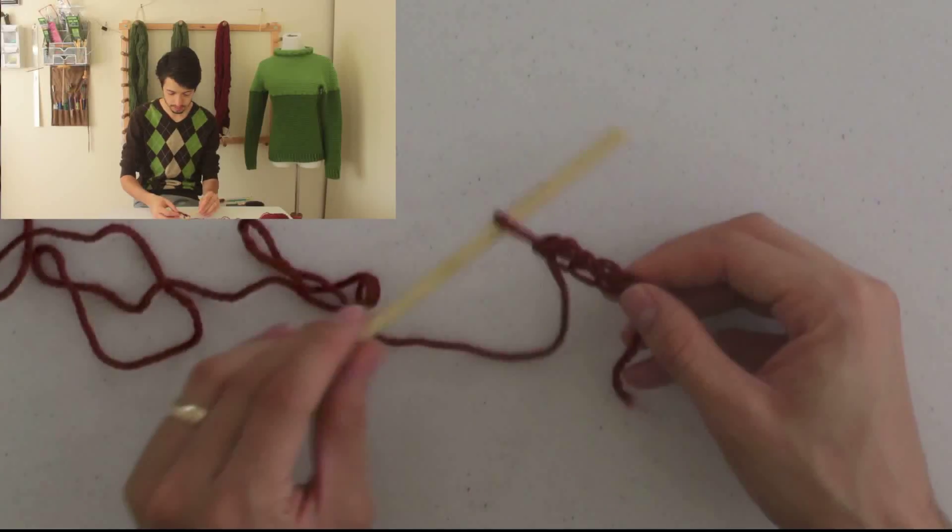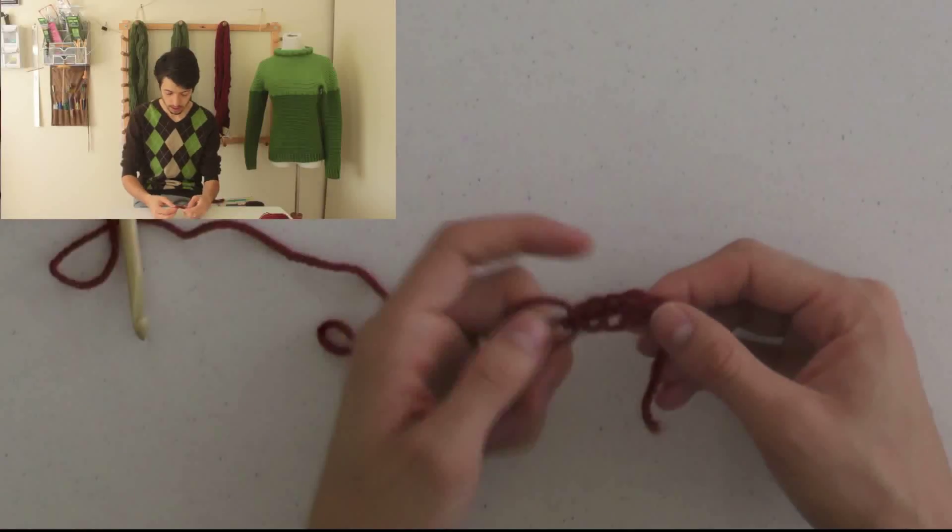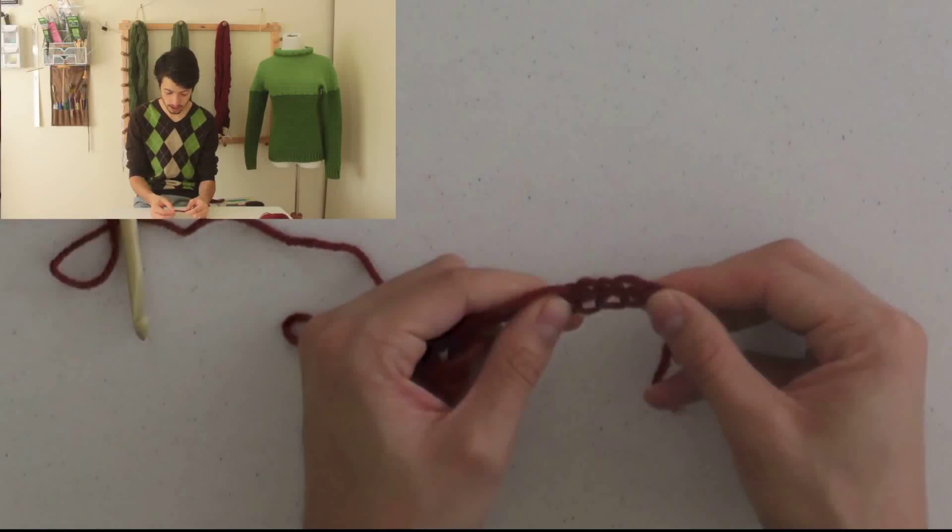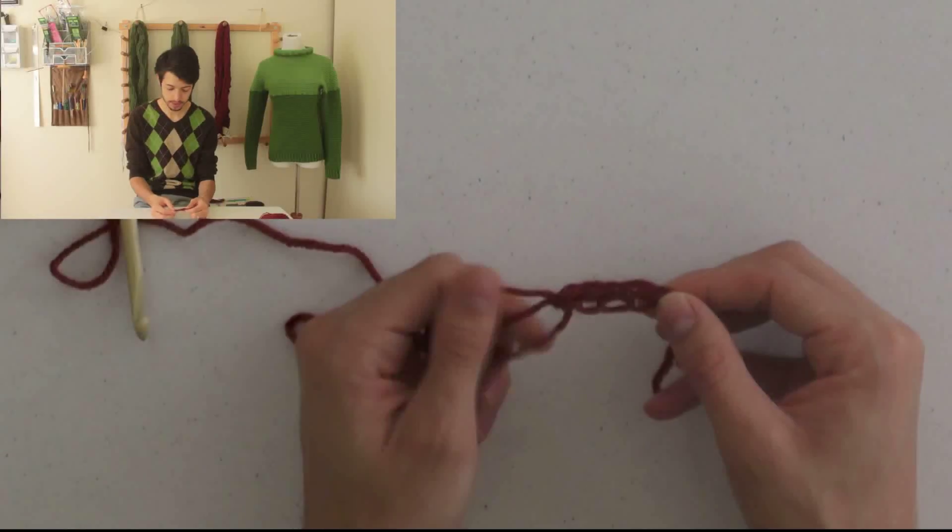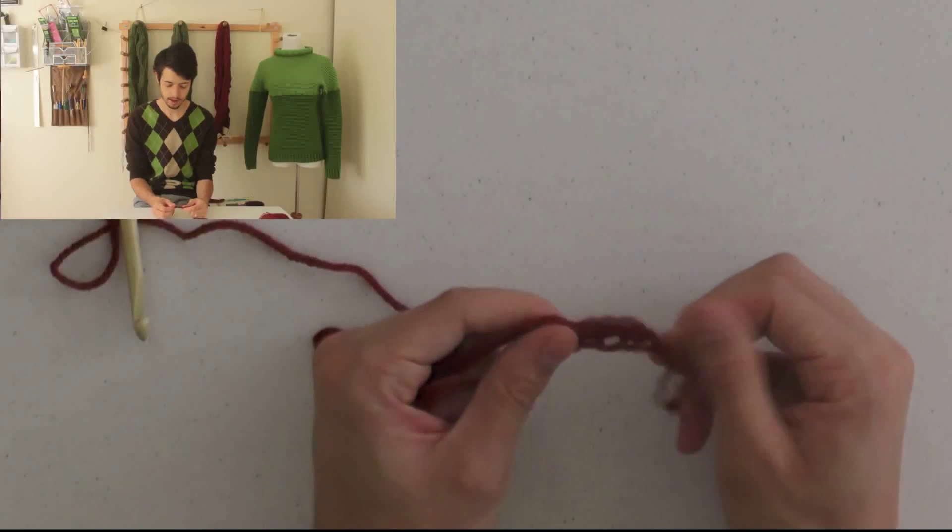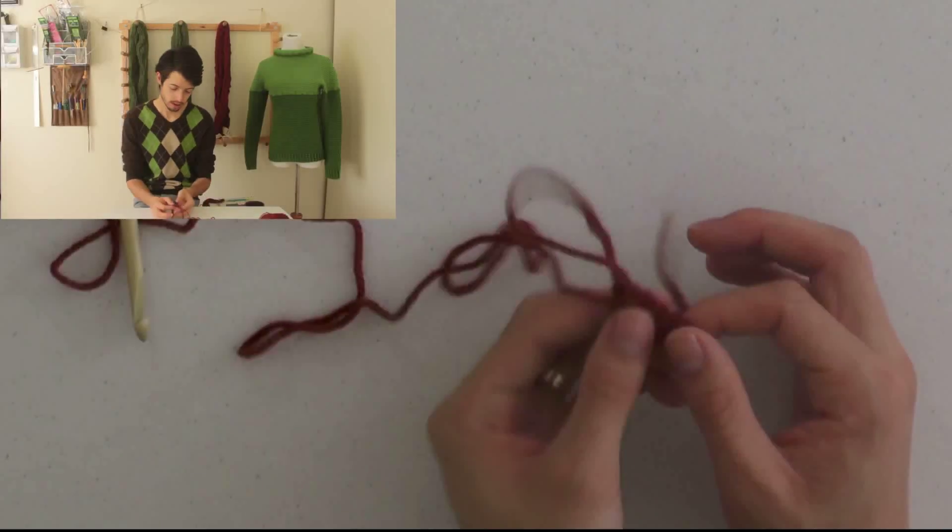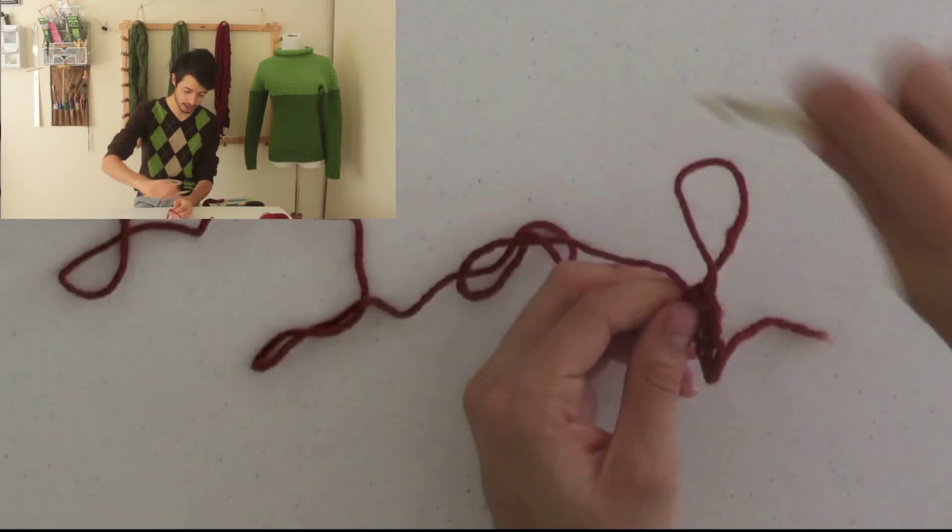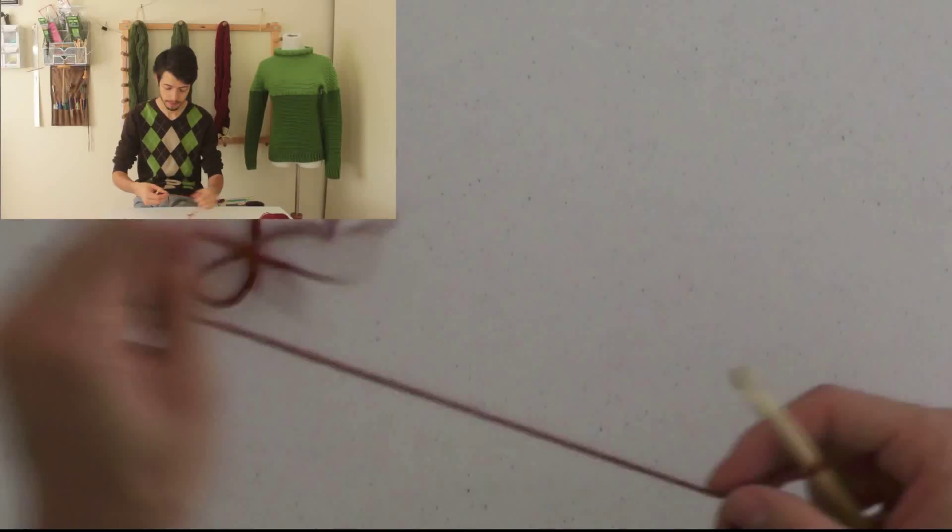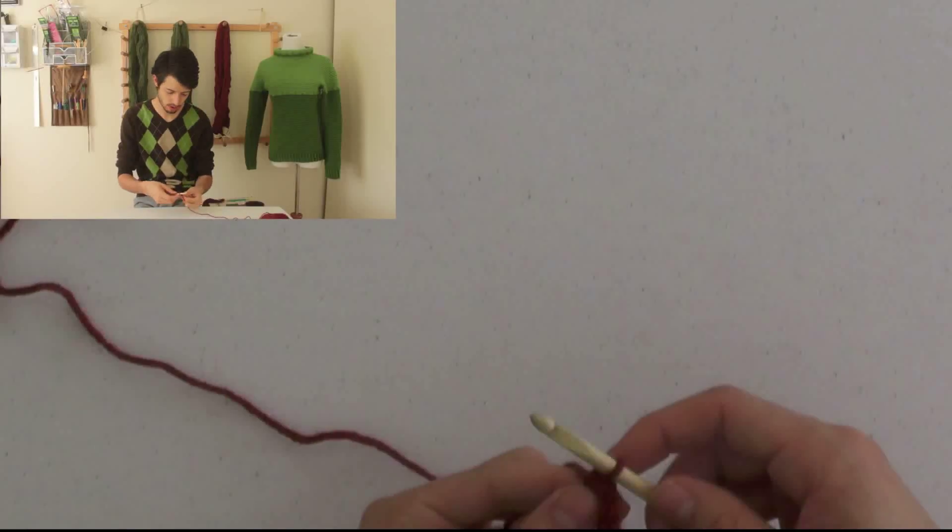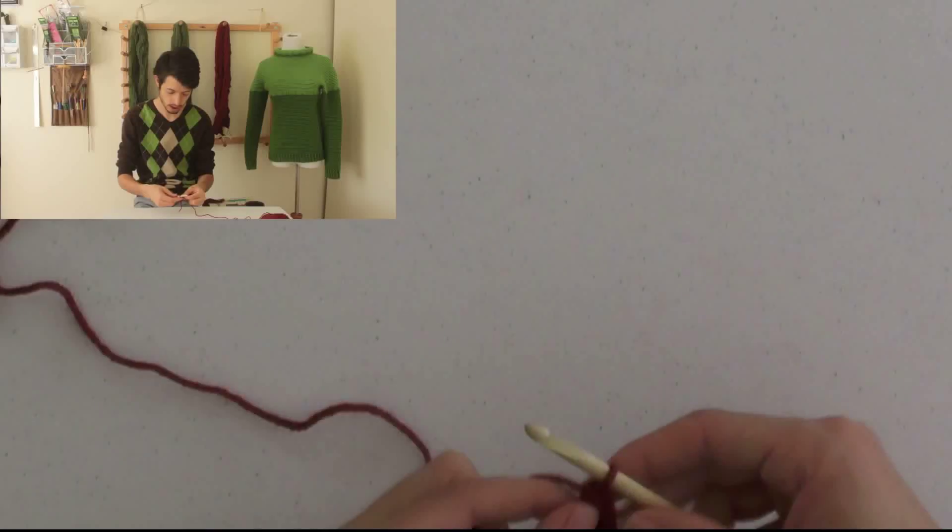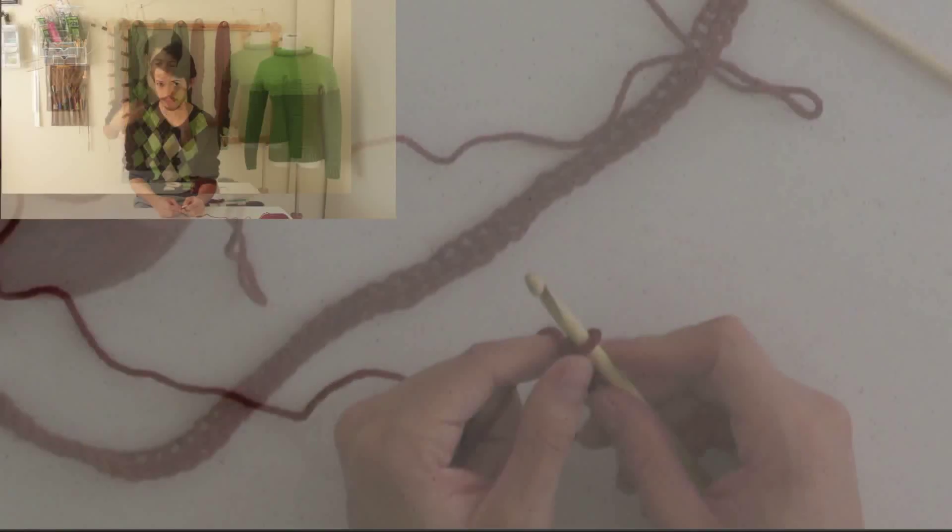You can see, this is already a lot more stretchy or flexible than a chain would be. So, we're going to do as many of these as we need for our neckline. And, in my case, it's 54. I've already done four. So, I just need to do 50 more. I've done my 54 foundation with single crochets.